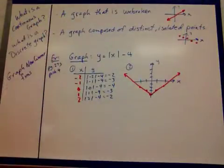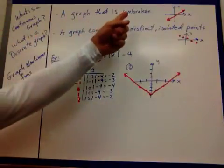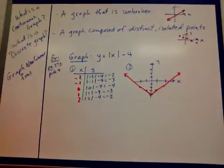Let's look at a couple of terms. What is a continuous graph? A continuous graph is just a graph that's unbroken. It's that line that we graph.